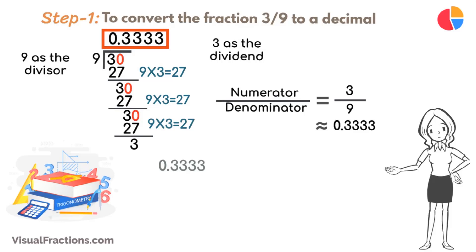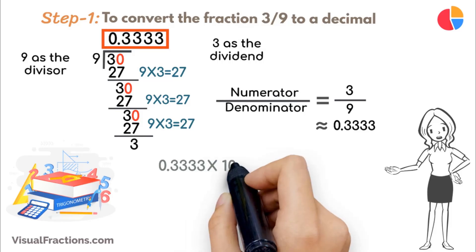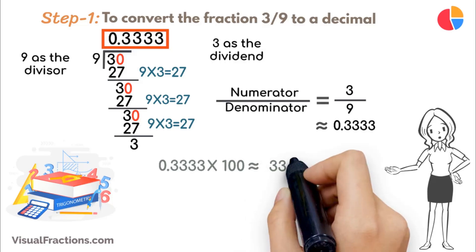Now, to convert 0.3333 to a percent, we simply multiply it by 100, resulting in approximately 33.33%.